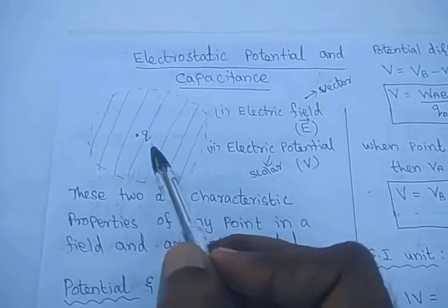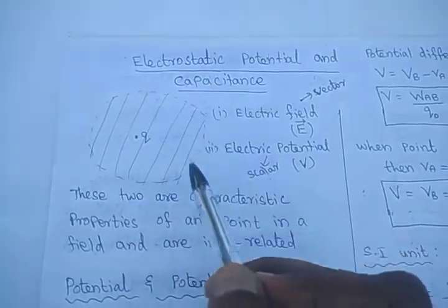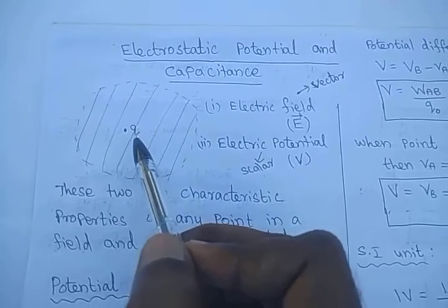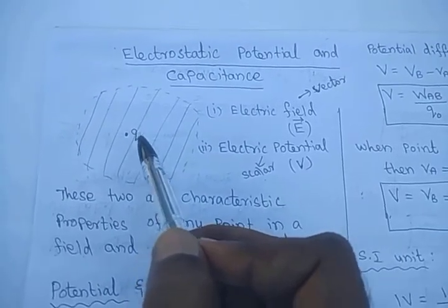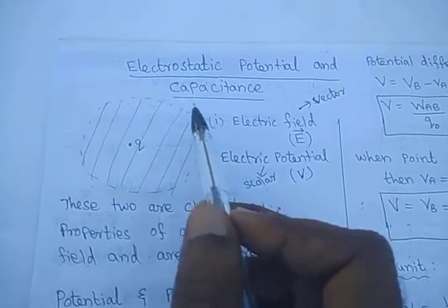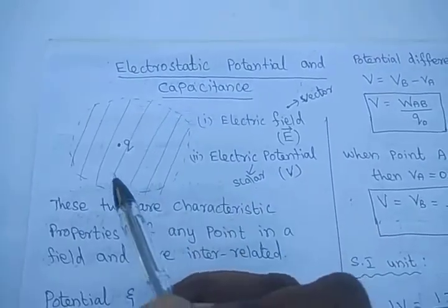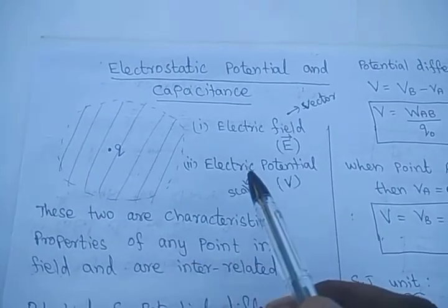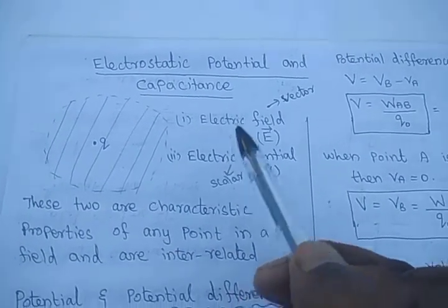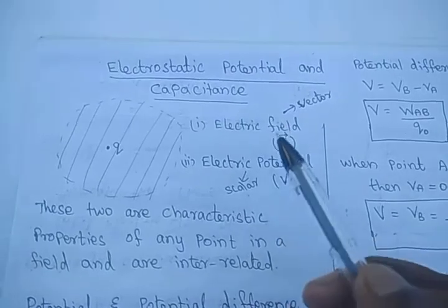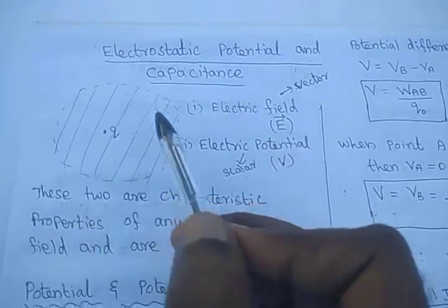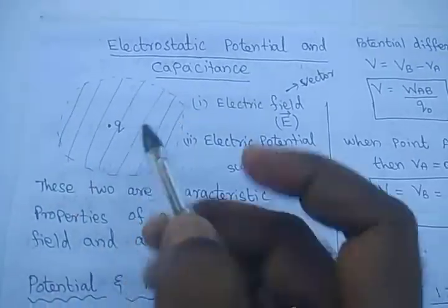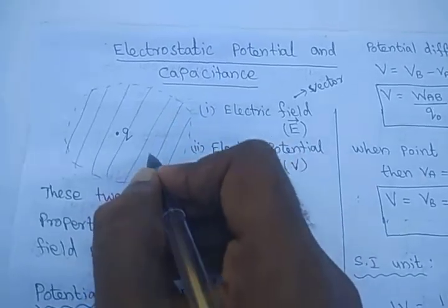This diagram shows the electric field of a point charge Q — it may be a positive or negative charge. Whenever there is an electric field, there is another characteristic property called electric potential. The electric field and electric potential are characteristic properties of any point in this field.